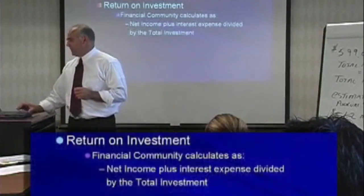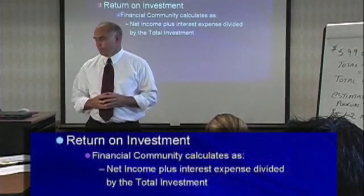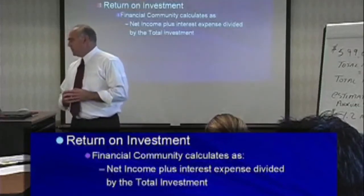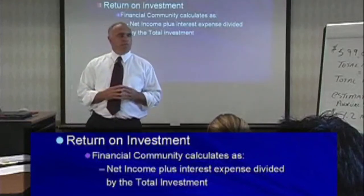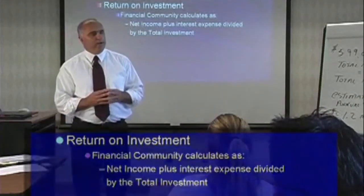Return on investment is another metric that industries use. The financial community calculates this as net income plus interest expense divided by the total investment. But as a small business operator, we recognize that there are multiple investors in this property: a private investor who provided $305,000 in capital as debt, $80,000 worth of leased equipment with associated debt, and $150,000 in investment provided by the owners. So we're going to approach return on investment calculations differently, focusing on the return on the owners' investment.